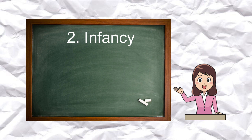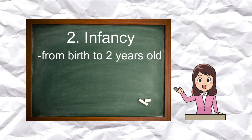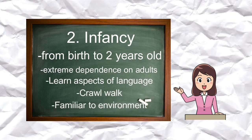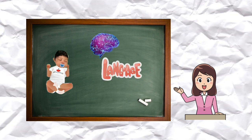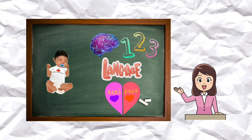Moving on, the second stage is called infancy — from birth to two years old — a time of extreme dependence on adults. In this stage, they learn the first aspects of language, to crawl and possibly walk, and they become familiar with their environment. They tend to develop psychological activities and begin to learn and improve language, symbolic thought, sensory-motor coordination, and social learning.